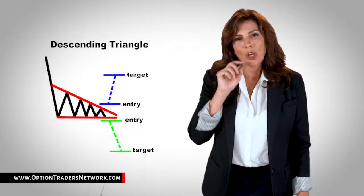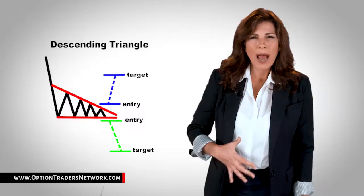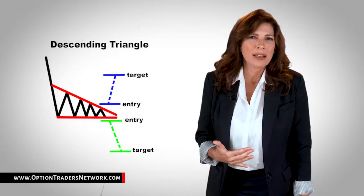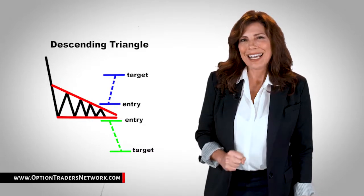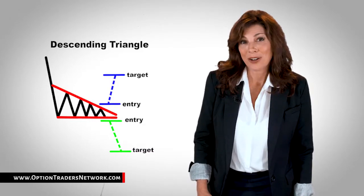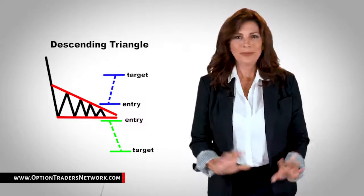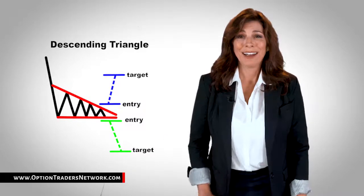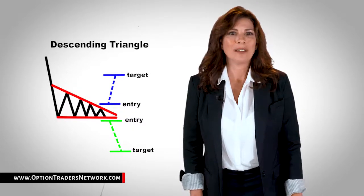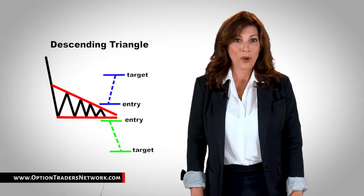In the chart above, you can see that the price is gradually making lower highs, which tells us that the sellers are starting to gain some ground against the buyers. Now, most of the time, and we do say most, the price will eventually break the support line and continue to fall.